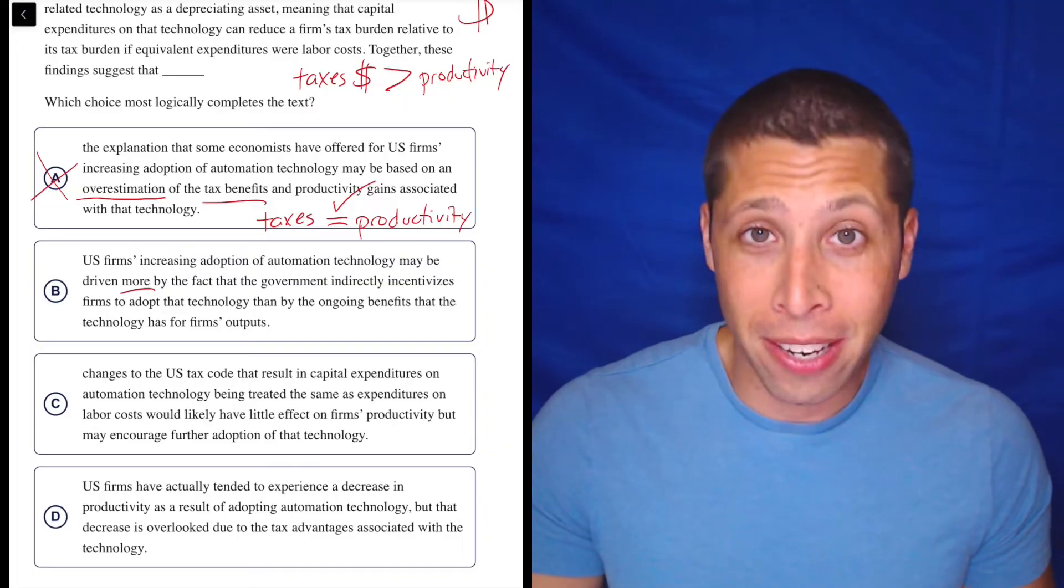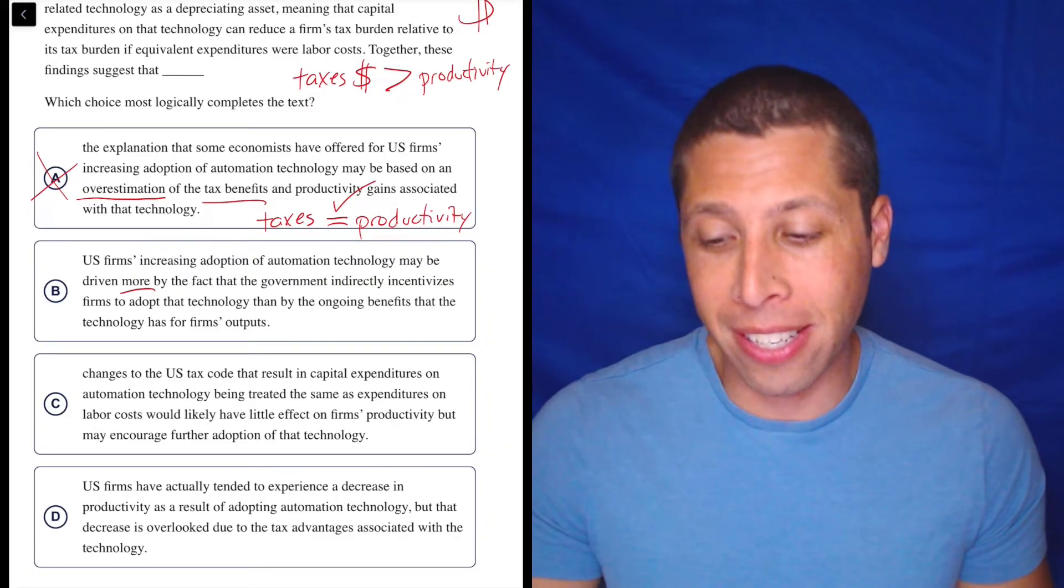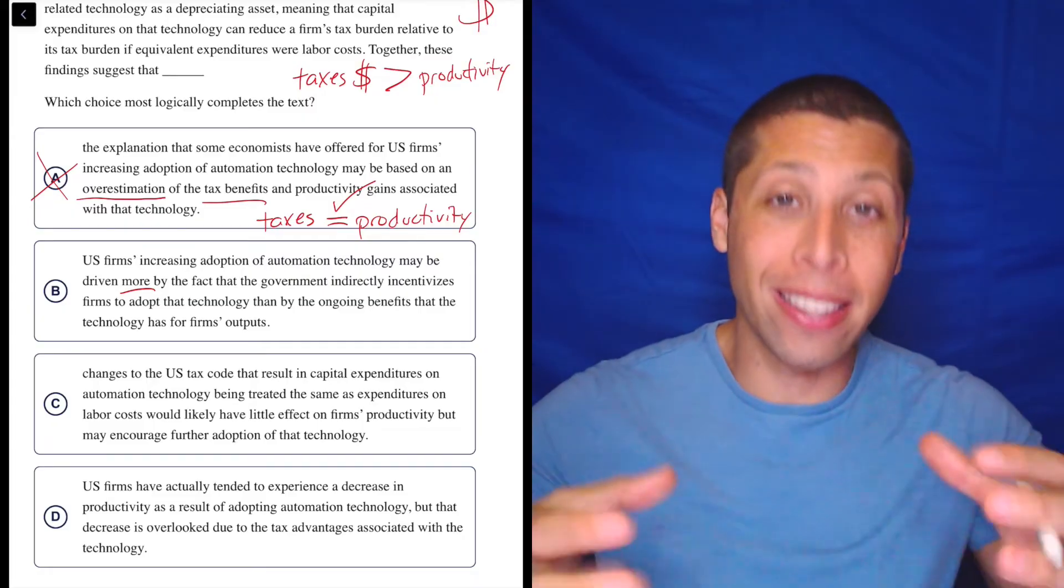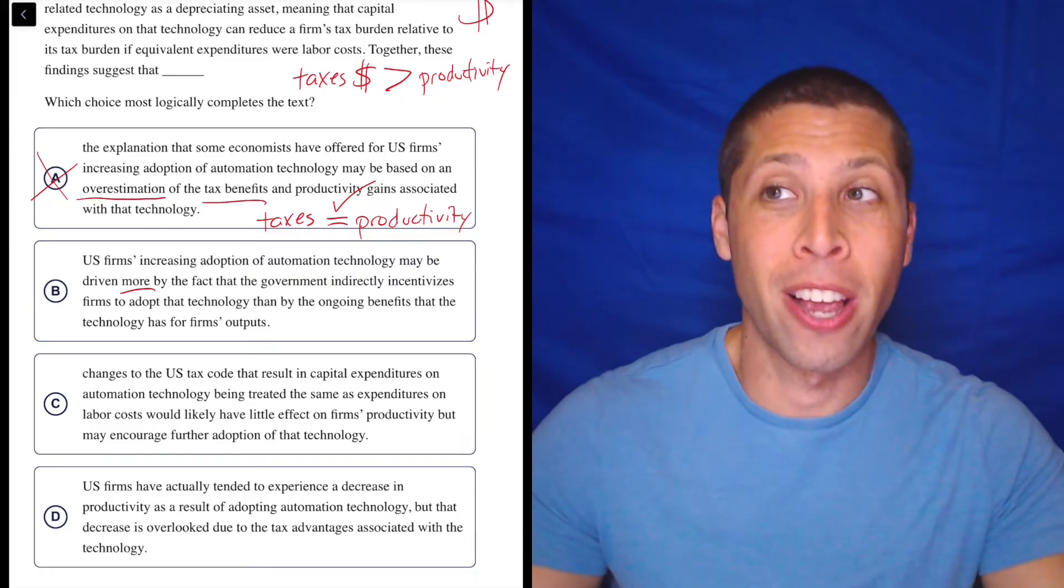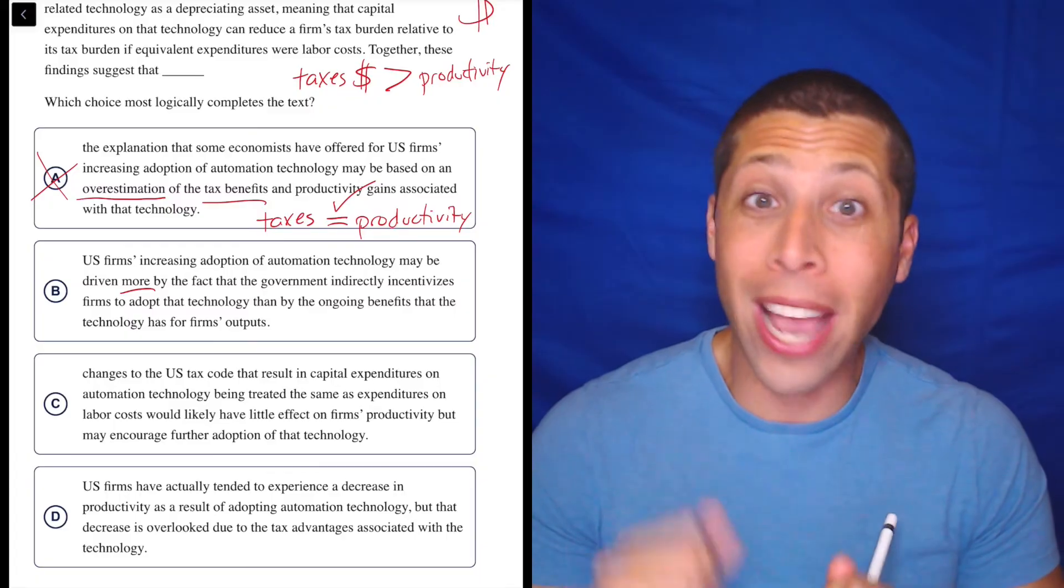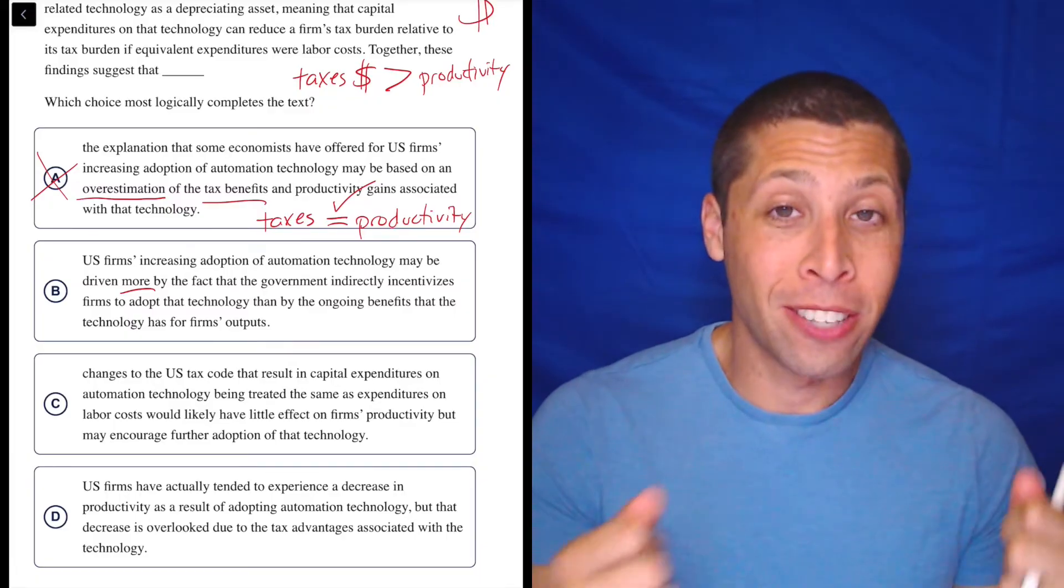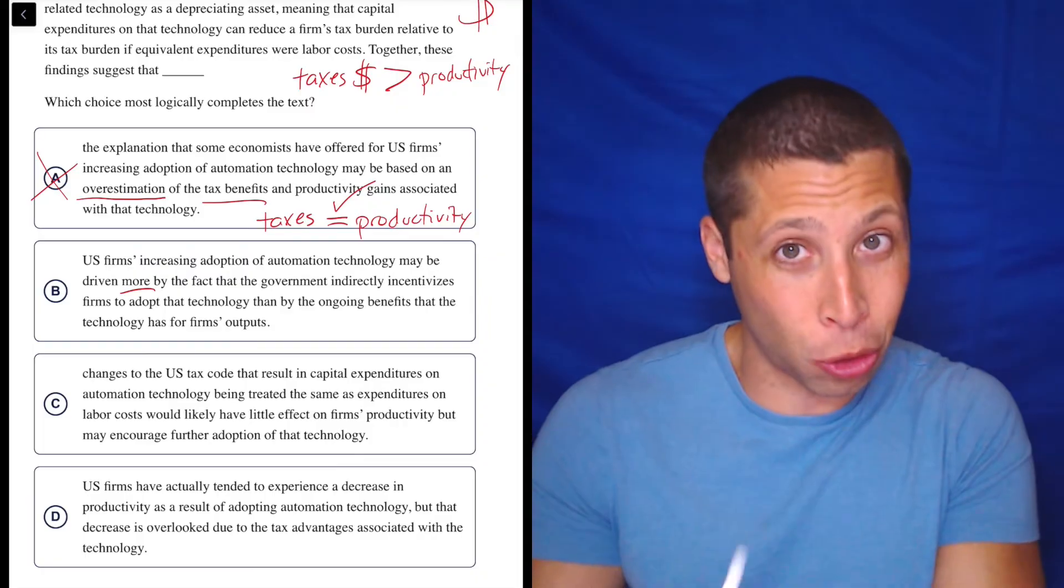Because there's a lot of times where the SAT does this, where instead of naming the same things that they said in the passage, they find some backdoor way to talk about them. They find some other words to do it so that we're less likely to pick the choice.